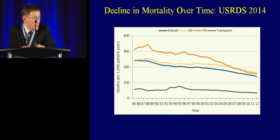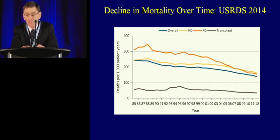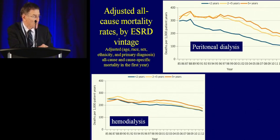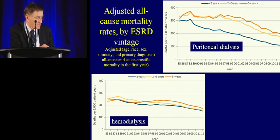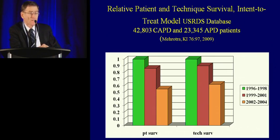Looking at the decline in mortality rates with PD over time: the line in orange shows the steep drop-off in mortality rates in PD over time compared to hemodialysis, where the line is much flatter. This is from the USRDS from 2014, showing mortality rate by ESRD vintage — less than two years, two to five years, and five or more years. There is a really dramatic improvement in the outcomes of PD over time, as nicely captured in a paper that Raj Malhotra published in KI a few years ago.